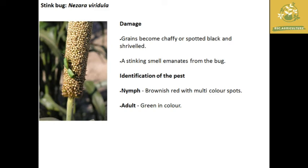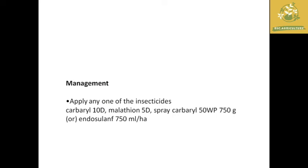The next important pest is the stink bug, with scientific name Nezara viridula. It causes damage by creating chaffy grains, spotted black or shriveled grains in kambu, and also produces a stinky smell. For identification: nymphs are brownish-red with multicolor spots, and the adult is green in color.